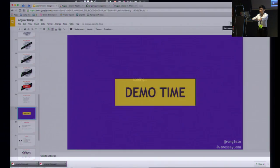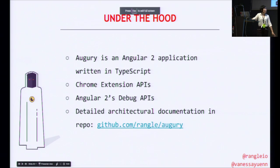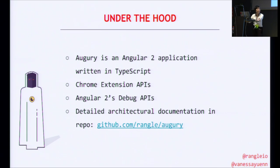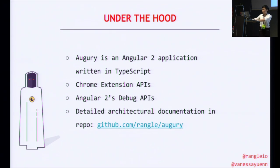So that about sums up the demo. A little bit about Augury as a piece of application — Augury is a Chrome extension, but under the extension wrapper, it's really just another Angular 2 application written in TypeScript. We leverage the Chrome extension API a lot for message passing, and it allows us to inspect whatever is in each tab. We also rely heavily on the Angular 2 debug API. We have to give a special thanks to the whole Angular core team for tailoring this debug API to exactly what we need — they have been helping us tremendously along the way. If you're interested, we have detailed documentation on our repo, so feel free to check that out.